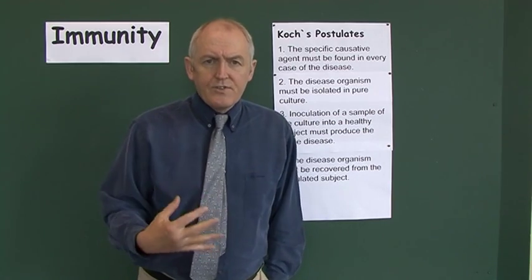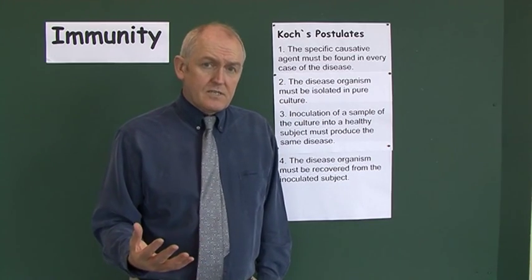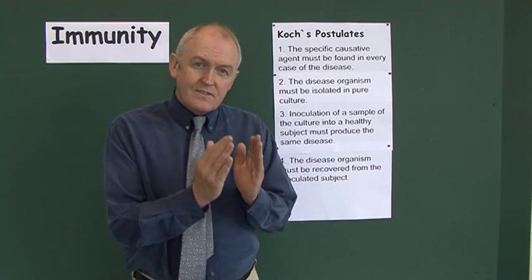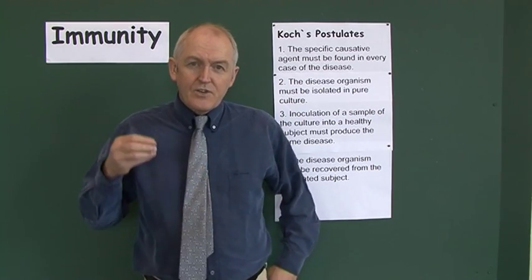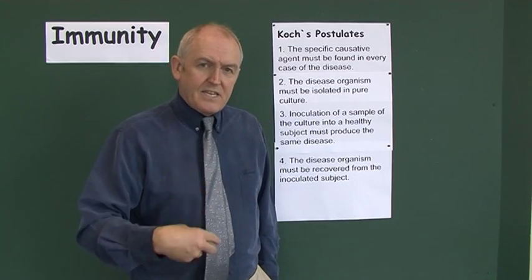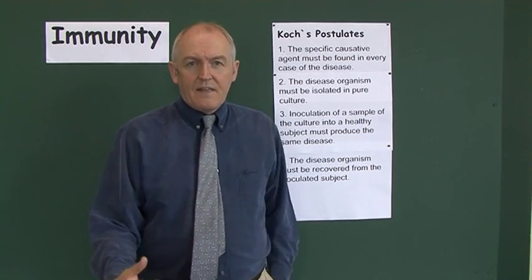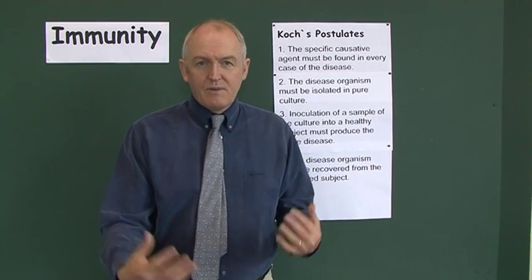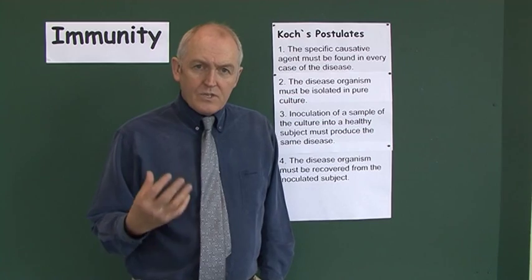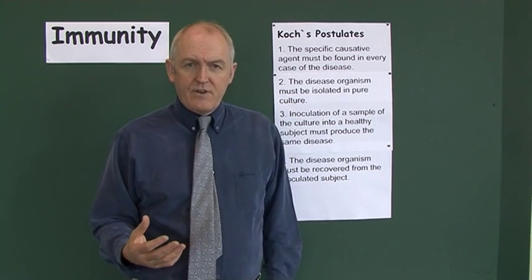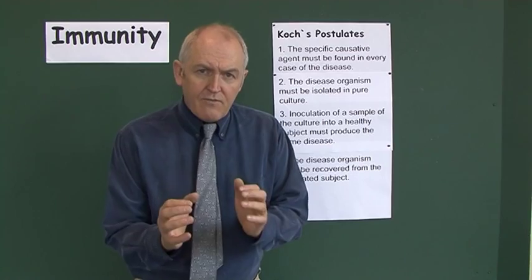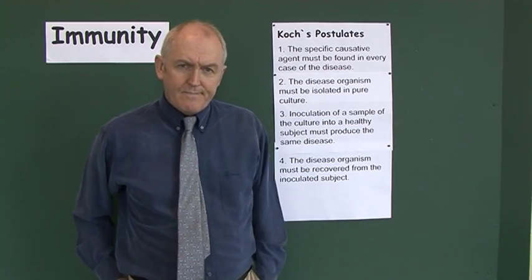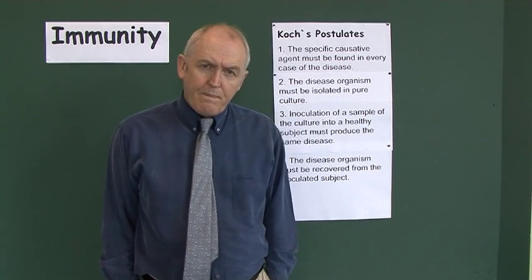Then, if you take a healthy subject and give them the bacteria or virus, that healthy subject should develop the disease. We don't do this every time in clinical practice, but this is the science behind it — you grow up the bacteria, give it to a healthy subject, and they get the same disease, showing that it's communicable. The fourth criterion is that you should also be able to recover the organism from the person you've deliberately infected.